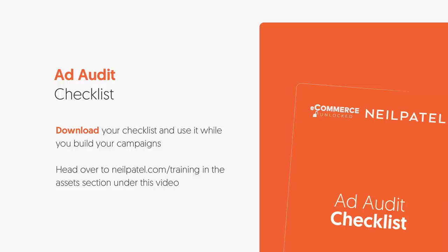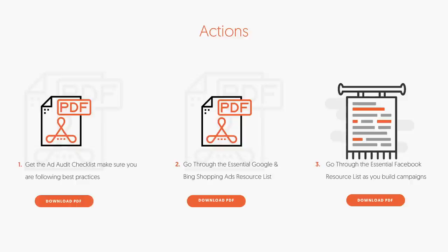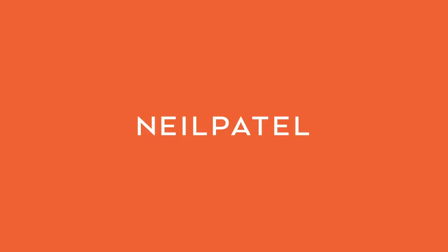Go to neilpatel.com/training, click on eCommerce Unlocked, go to Week Four, the first lesson, and download the ad audit checklist. I also have essentials sheets for Google, Bing, and Facebook there for you to download. Thank you very much, and I look forward to helping you grow your e-commerce traffic.